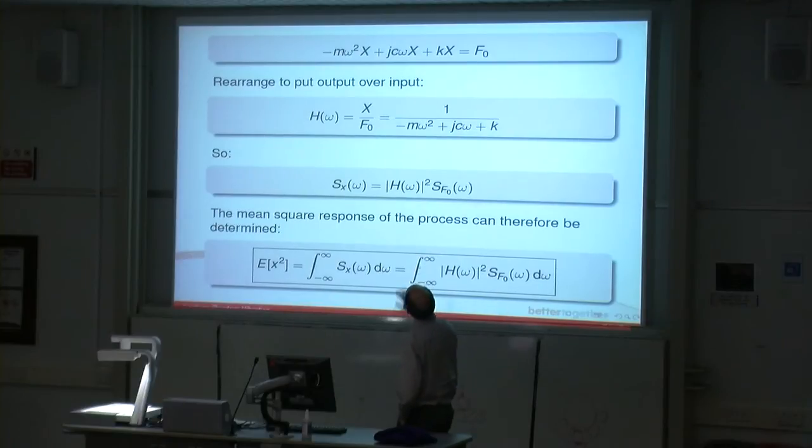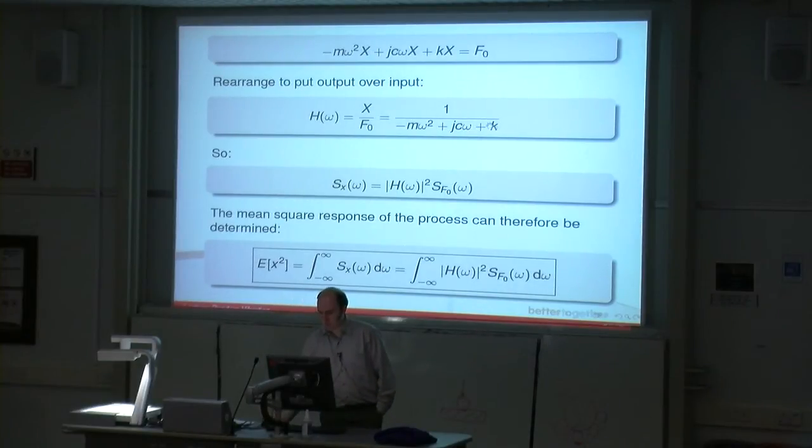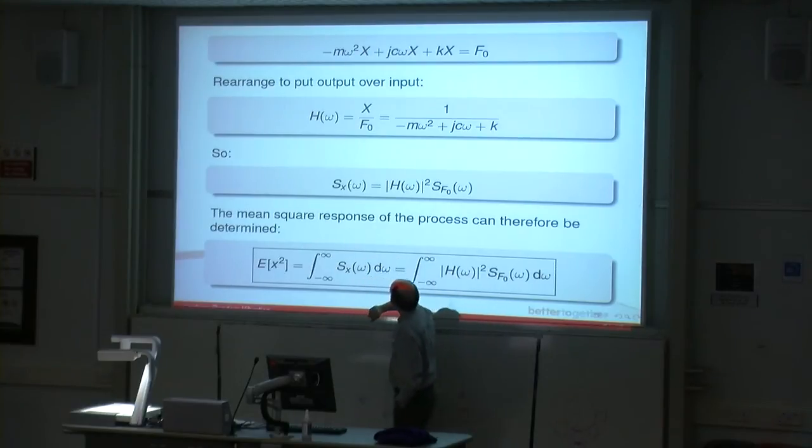You end up with this equation at the top. Then it's just a matter of rearranging that equation to put the output over the input as a fraction. I've rearranged that equation, I've put X divided by F naught, and that's our complex frequency response function. That gives us this fraction here, 1 over minus Mω² plus JCω plus K. That gives us this, and this is our H omega. This equation down here is what we said: the output spectral density is the input spectral density multiplied by the modulus of the complex frequency response function squared.